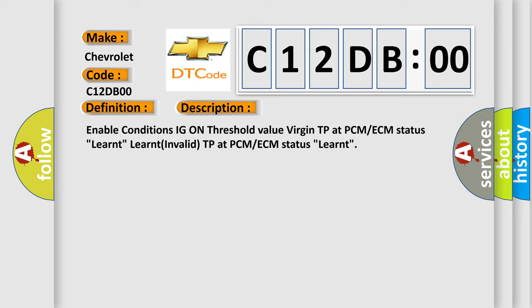Enable conditions: IG on threshold value. Virgin TP at PCM ECM status: Learned. Invalid TP at PCM ECM status: Learned.